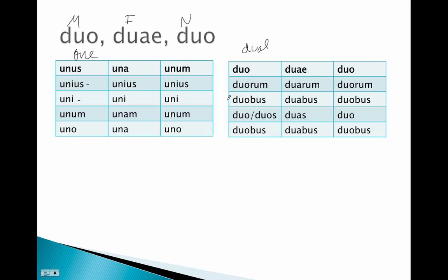The dative and ablative: duobus, duabus, duobus. Slightly strange - we have the o in the masculine and neuter, but the a in the feminine. And then in the accusative: duo or duos, duas feminine, and duo neuter, and then duobus, duabus, duobus.